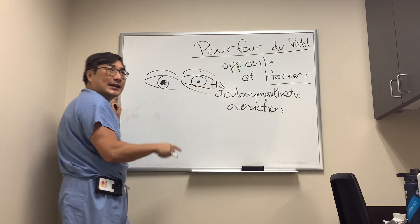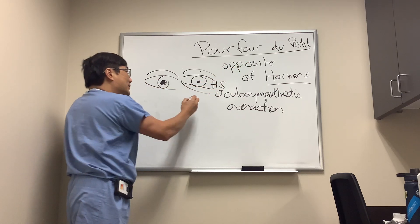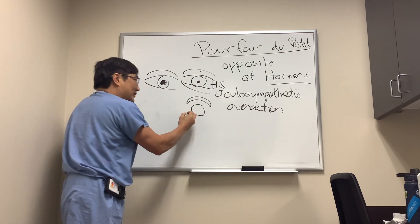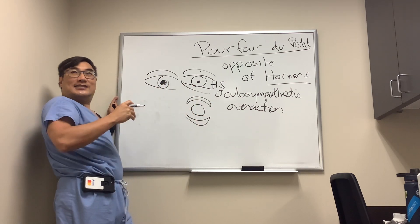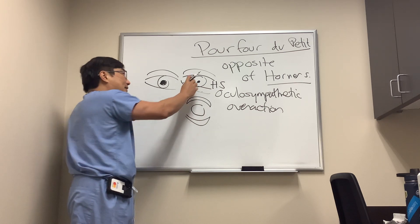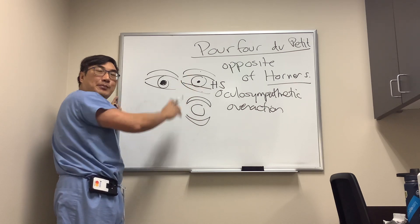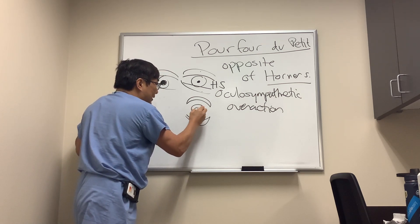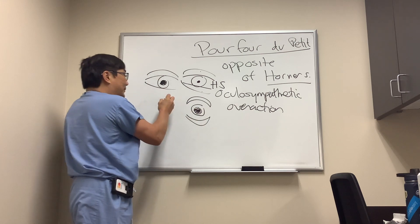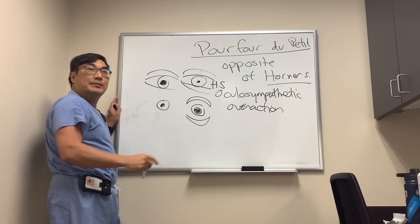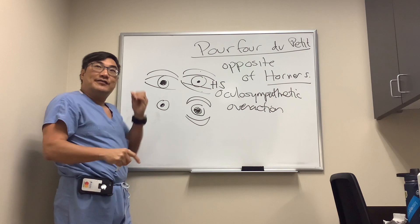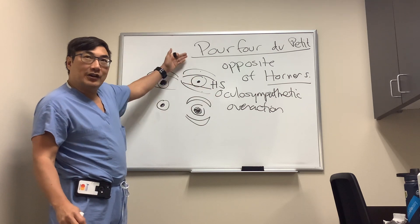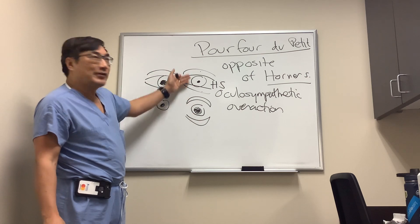In a Pourfour du Petit, it's the opposite of a Horner syndrome. So instead of ptosis, they have lid retraction. Instead of upside down ptosis, they have upside down retraction. And so it'll be apparent exophthalmos instead of apparent enophthalmos — it's apparent because it's not real, it's because of the lid retraction. And the pupil will be bigger, because it's sympathetic overdrive. So an overactive sympathetic leads to lid retraction rather than ptosis, and a big pupil rather than a small pupil.